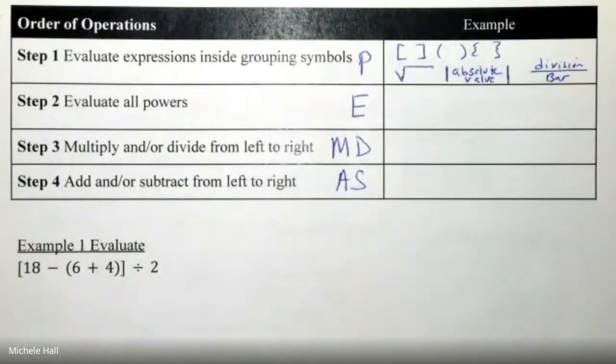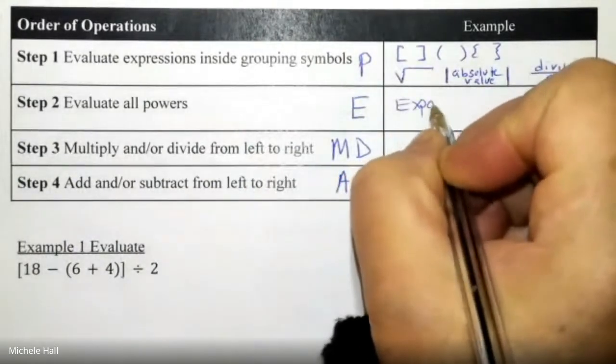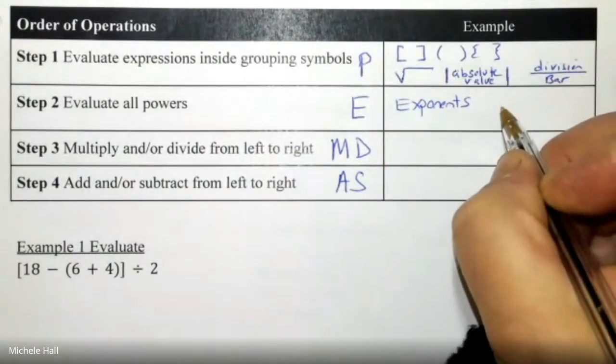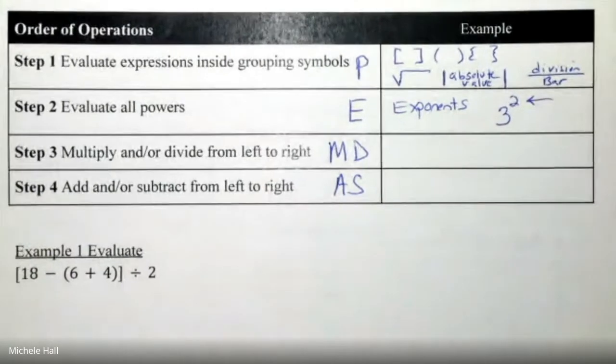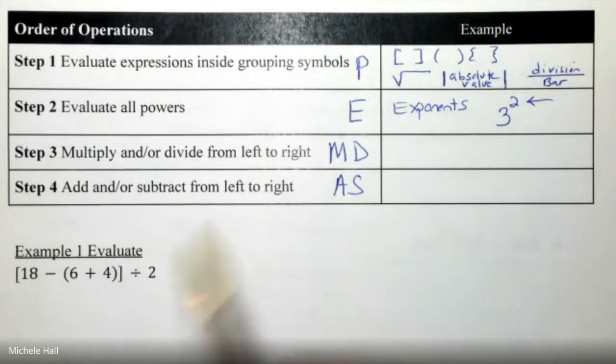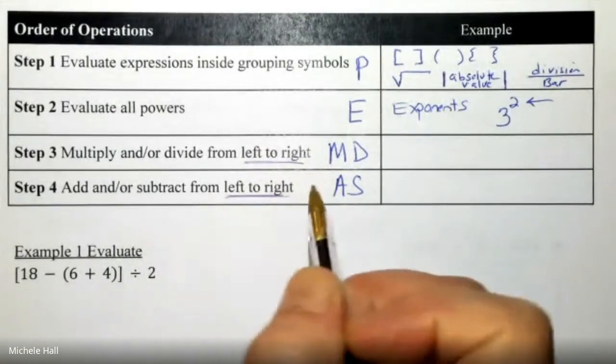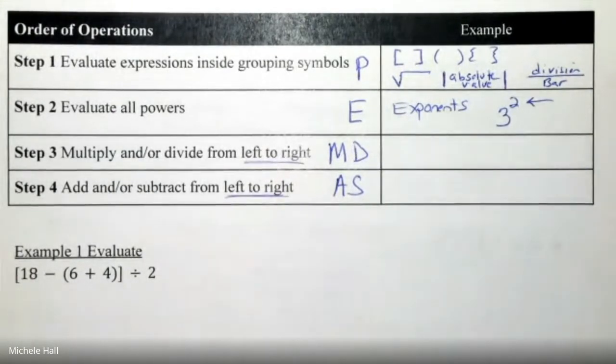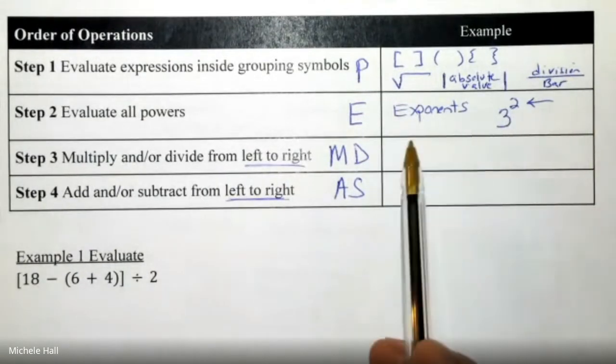Next we have exponents. There is your exponent, it can look like that anywhere where you see a power. Multiplying and dividing - remember you need to go from left to right, whichever occurs first, and that would also be true of adding and subtracting left to right, whichever occurs first. And that also is true for exponents - if I had two different sets of exponents, I always work left to right.